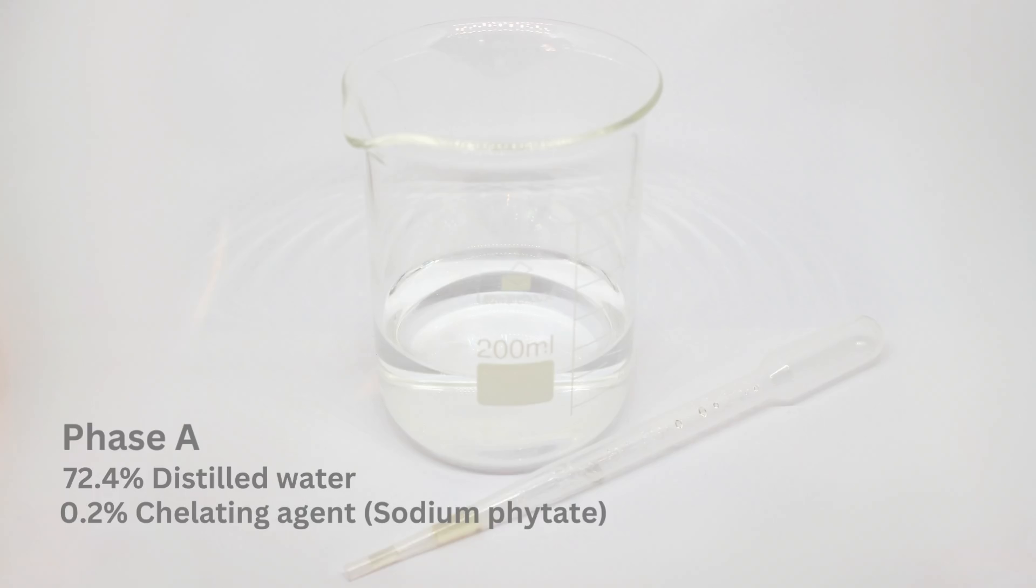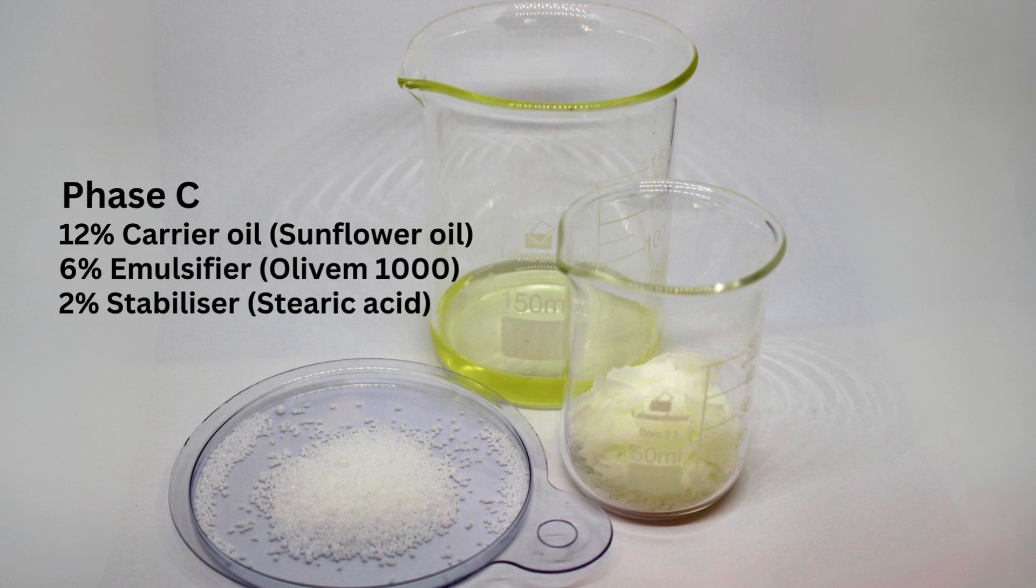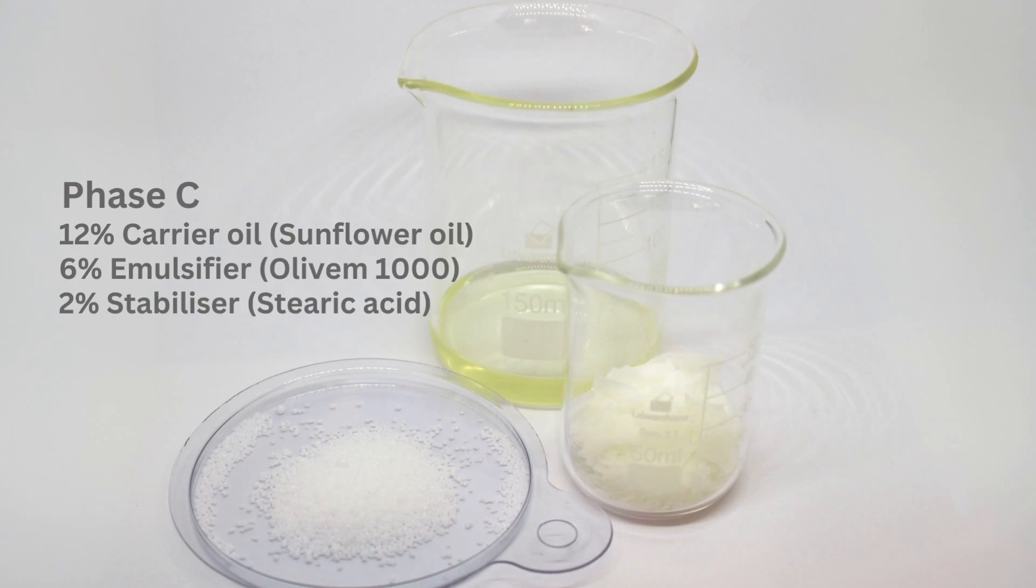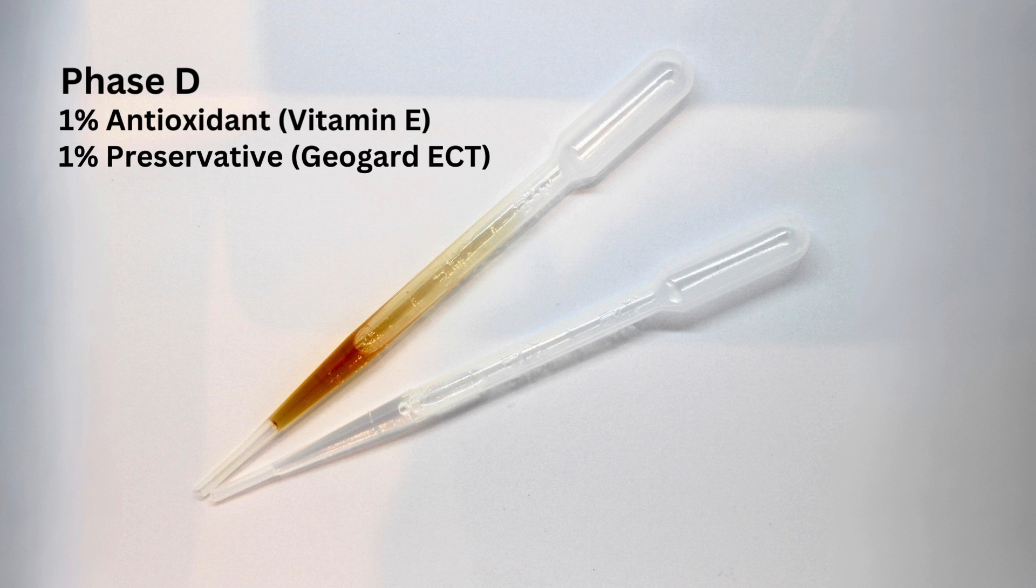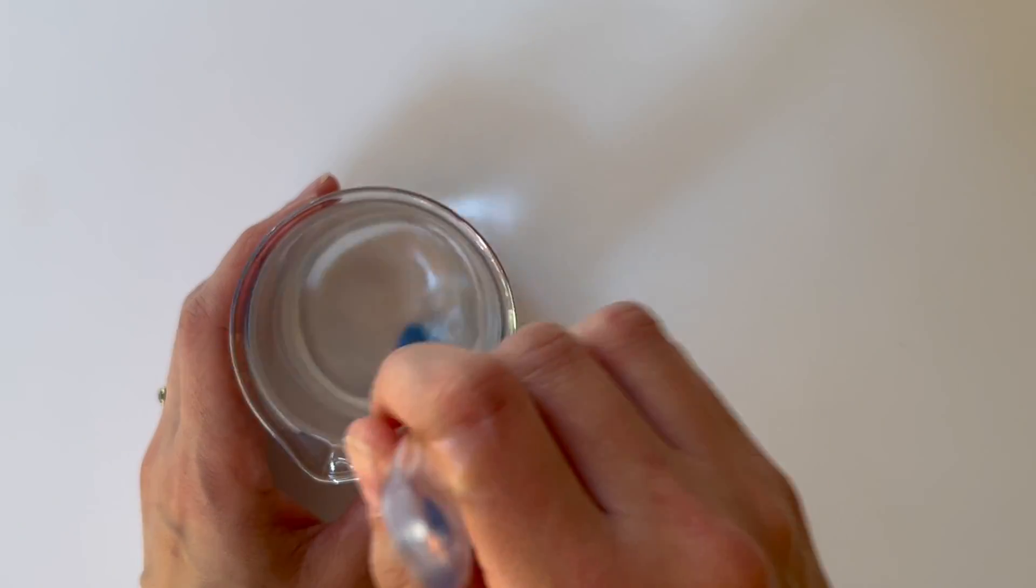So we've got our phase A ingredients, our phase B ingredients, phase C ingredients, and phase D ingredients. We'll add our chelating agent to our water and our phase A ingredients and give that a stir.